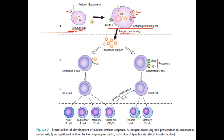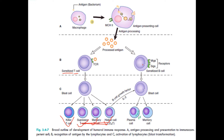The processed antigen, whenever it comes in contact with a T cell, makes it a sensitized T cell. This sensitized T cell converts to a blast cell, which gives rise to four types of T lymphocytes: killer T cell, suppressor T cell, memory T cell, and helper T cell. On the other side, whenever a B cell comes in contact with the processed antigen, it becomes a sensitized B cell, which converts to a blast cell and then to plasma cells and memory cells. Plasma cells give rise to different types of immunoglobulins.